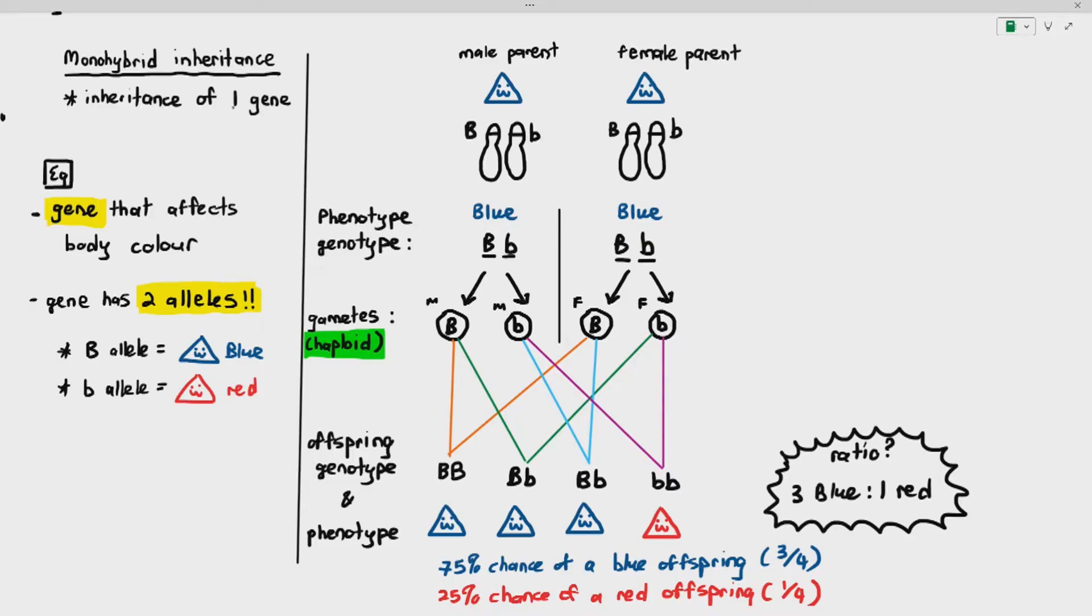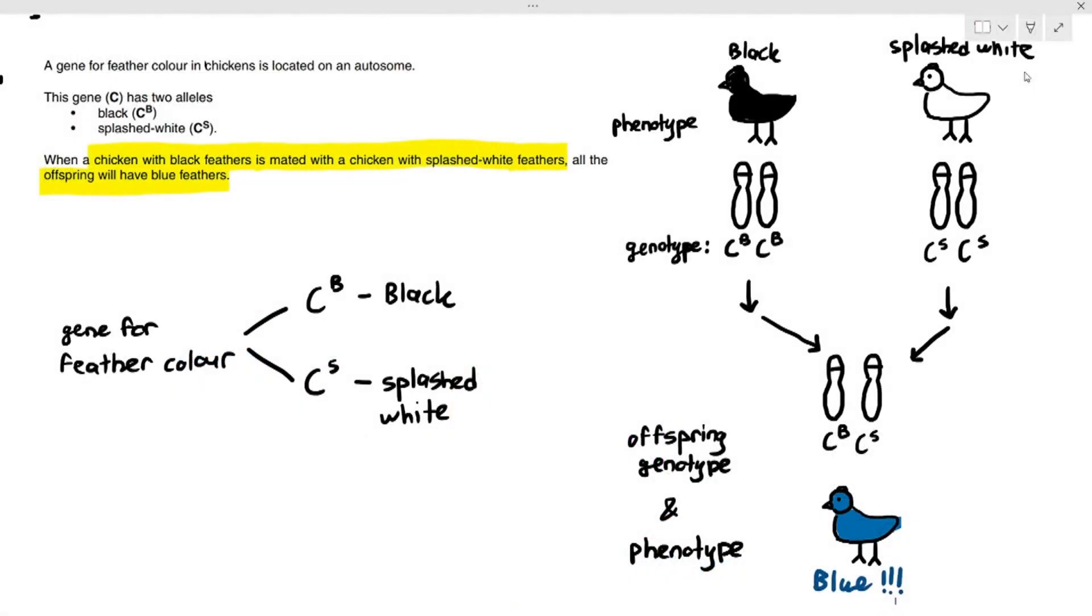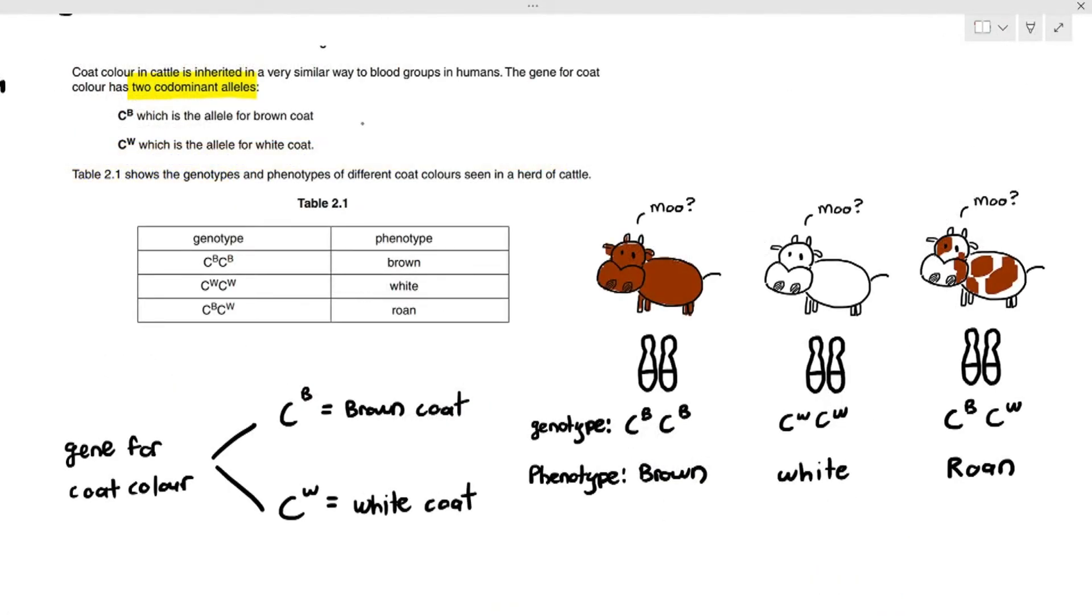In my example here, I showed you the inheritance of a gene for body color, but in all my examples, you were looking at one gene - the gene for body color, or the gene for feather color, or the gene for coat color. We are just looking at one particular gene in all these examples.